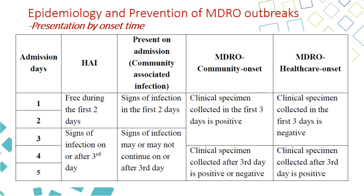For HAI surveillance, we look for positive culture and/or symptoms during the first two days. In HAI, we expect the patient is free — no symptoms meeting the definition, no positive culture — during the first two days. After that, the patient could have both symptoms and a positive culture. If a patient has a positive culture and/or symptoms during the first two days, we consider this infection present at admission — community onset, or in surveillance terms, present on admission.